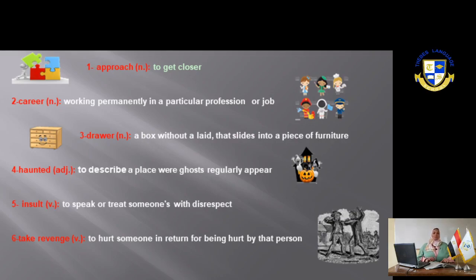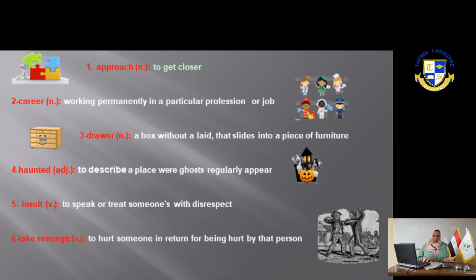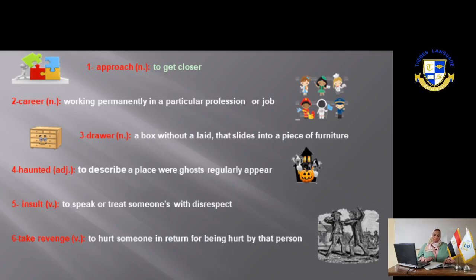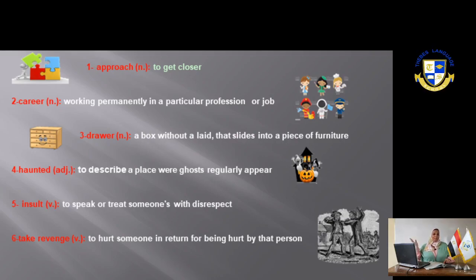Now, how shall we complete this paragraph? Number four goes with letter E: 'But just as he approached the top of the stairs' — approached means reached it — 'a door opened and the two children came out with a pillow to throw it.'